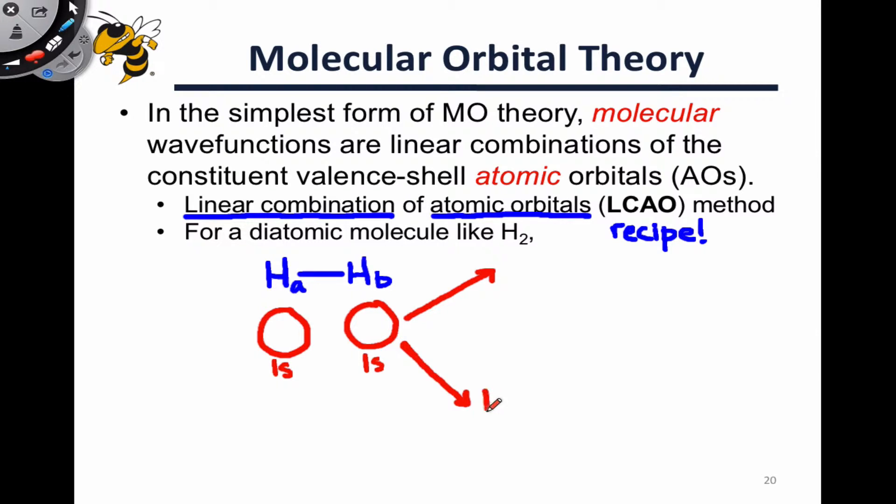We could imagine combining these in a constructive way, 1s plus 1s, to produce an orbital where there's reinforcement between the two nuclei and we end up with a single orbital with all the same phase, that is all the same color, all the same sign of the wave function, say, positive.